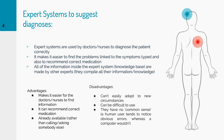The disadvantages are: it cannot easily adapt to new circumstances, and it can be difficult to use — doctors and nurses need time and training to actually use the expert system. They have no common sense because a human user tends to notice obvious errors, whereas a computer wouldn't, as computers are just programmed to do one thing. Since humans have brains, we can make decisions more accurately, in a more creative and varied way, rather than computers.